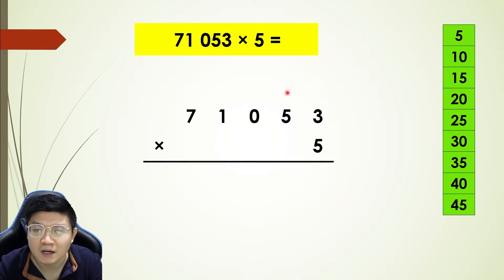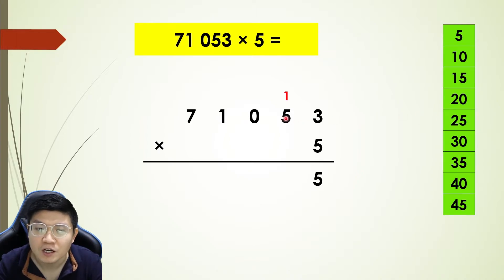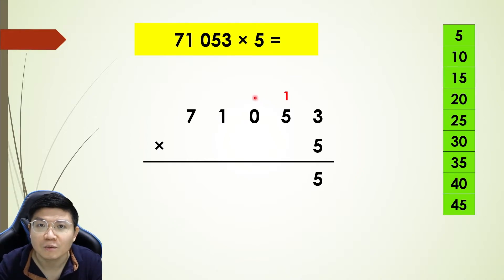The next one: five times five, which is 25 — one, two, three, four, five, twenty-five. That 25 we are going to plus the one here, so it becomes 26. Put two here and six here.